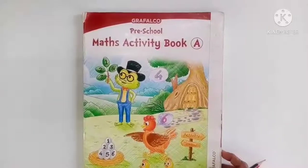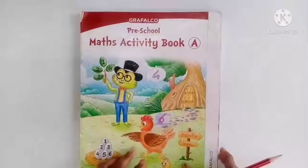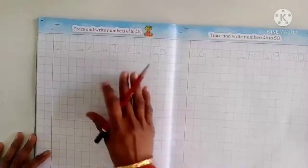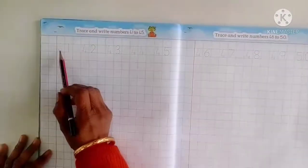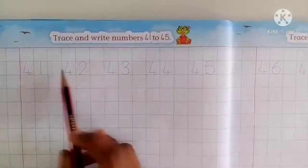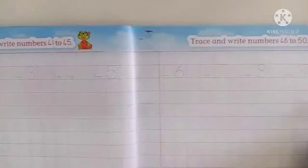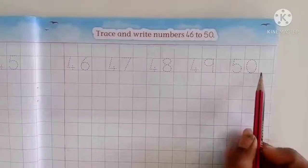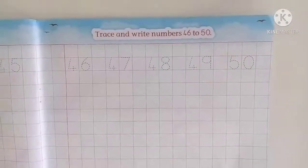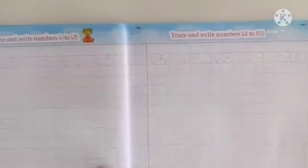So now children, take out your maths activity book and open to page number 56. In this page you have to trace numbers 41 to 50. First you have to trace, and then write down in the box.